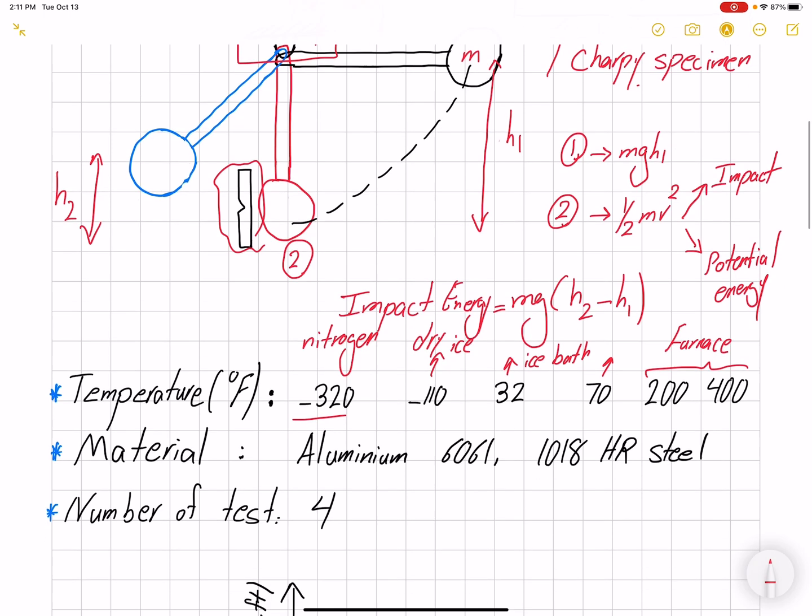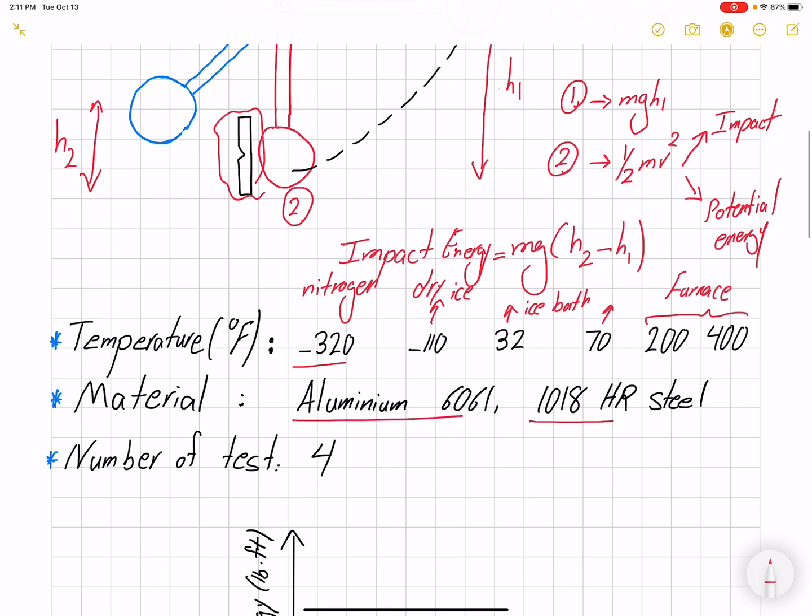The materials we're going to use are aluminum and hot rolled steel. For each material at each temperature, we're going to perform four tests so we can do statistical analysis, since we have more than one data point for each scenario.